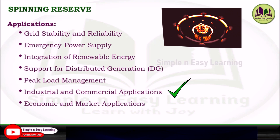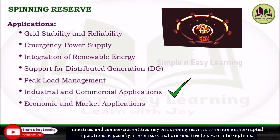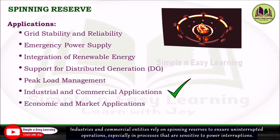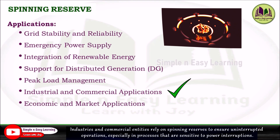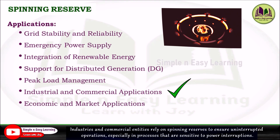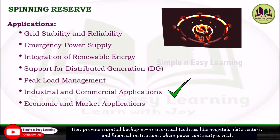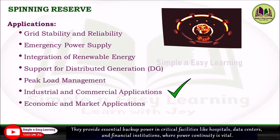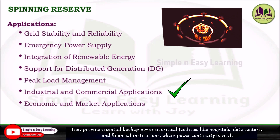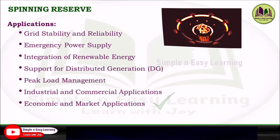The next application is industrial and commercial applications. Industries and commercial entities rely on spinning reserves to ensure uninterrupted operations, especially in processes that are sensitive to power interruptions. They provide essential backup power in critical facilities like hospitals, data centers, and financial institutions, where power continuity is vital.